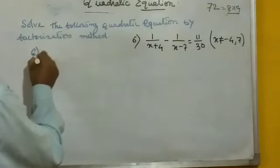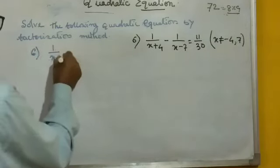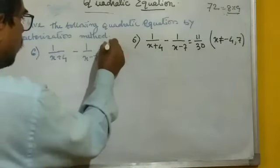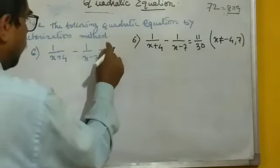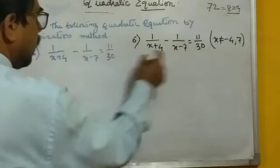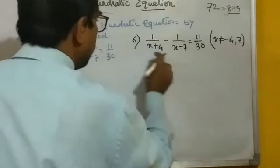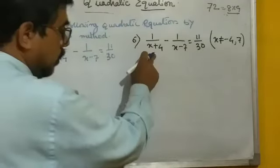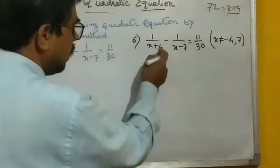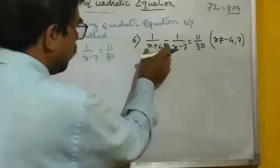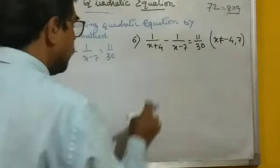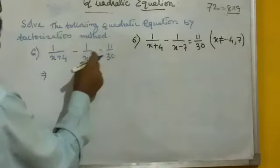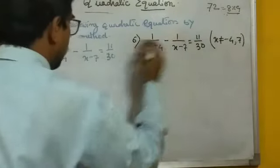Question 6 is: 1 by (x plus 4) minus 1 by (x minus 7) equal to 11 by 30. Note that x cannot equal minus 4 or 7, because that would make the denominator 0 and the equation meaningless.